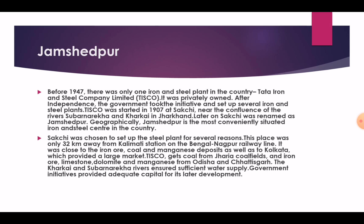Geographically, Jamshedpur is the most conveniently situated iron and steel centre in the country. Sakchi was chosen to set up this steel plant for several reasons: this place was only 32 km away from Kalimati Station and the Bengal Nagpur Railway Line. It was close to iron ore, coal and manganese deposits, as well as to Kolkata which provided a large market. TISCO gets coal from Jharia coalfields and iron ore, limestone, dolomite and manganese from Odisha and Chhattisgarh. The Kharkai and Subarnarekha rivers ensured sufficient water supply, and government initiative provided adequate capital for its later development.